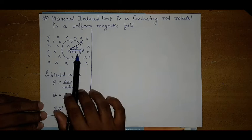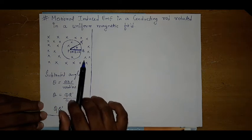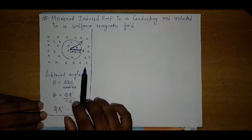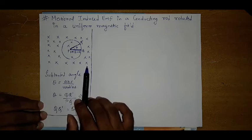Now this rod is moving inside a magnetic field which is going into the surface. That is why it is represented by a cross symbol.